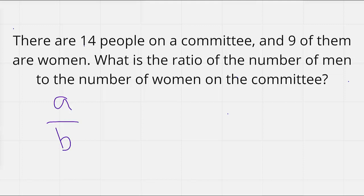So let's take a look at what they're asking for in this question. It wants us to give the ratio of the number of men to the number of women on the committee. So it looks like the number of men is going to be in our numerator, since that was given first, and the number of women is going to be our denominator, since that was given second.